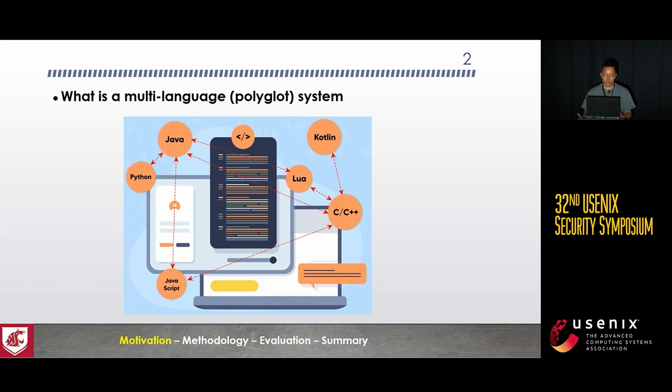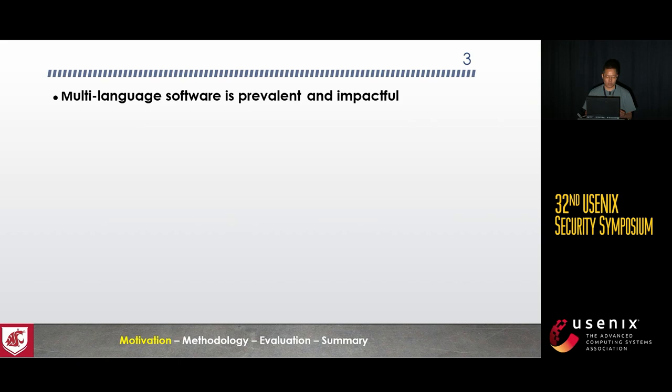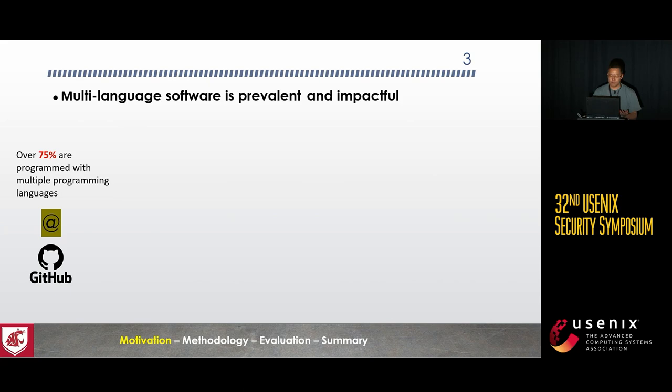A multi-language system is typically constructed with multiple programming languages for interacting language components or modules. Usually, different language components interoperate with each other for functionalities, offering flexibility and the ability to leverage the strengths and features of various languages. With such benefits, multi-language development is becoming popular. Our empirical studies indicate that over 75 percent of projects on GitHub are programmed with multiple programming languages. As a result, multi-language software is becoming prevalent in various domains.